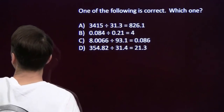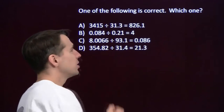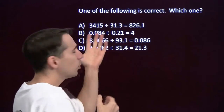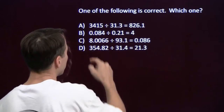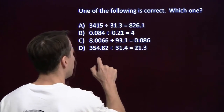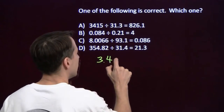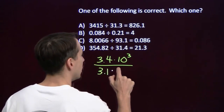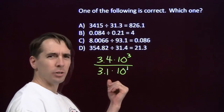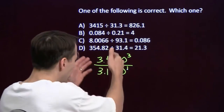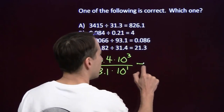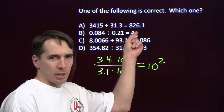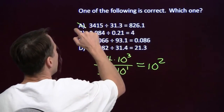Let's try some divisions. The calculator is really bad at multiplication, and division is just multiplying by the reciprocal, so it's bad at division too. We'll think about powers of 10. For this first one, I've got a number that's around 3.4 times 10 to the third, and I'm dividing by something that's around 3.1 times 10 to the first. The 3.4 and 3.1 are pretty close to each other, and 10 to the third divided by 10 to the first is around 10 squared — around 100. This answer is not even close to 100, so the calculator missed this one.